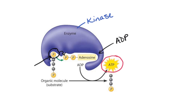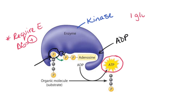That's substrate level phosphorylation. This does require energy, and the reason it requires energy is because the ATP molecule is going to have a higher potential energy than the ADP that we started with. Anytime we have that, it means that energy is required — in other words, this has a delta G that is going to be positive. This is the way that we're going to see ATP made in the first two stages of cellular respiration: glycolysis, which will be the very first stage, and we're also going to see in the citric acid cycle that we use this very same method.